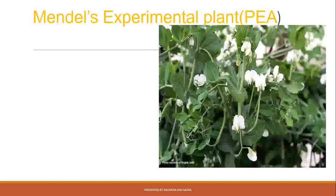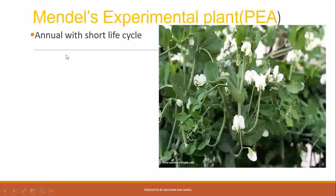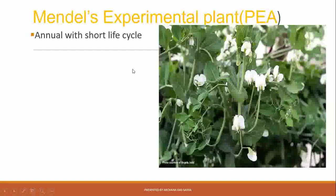Mendel experimented with pea plants. Why did he select pea plants and not any other? Pea plants are annual — within a year you can sow the seeds, they will grow, flower, produce seeds, and then die. So in seven years he could study seven to eight life cycles. Studying many generations consecutively allows you to reach complete conclusions, which is possible with pea plants due to their short life cycle.